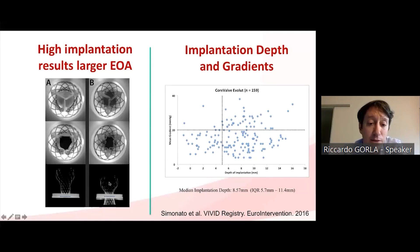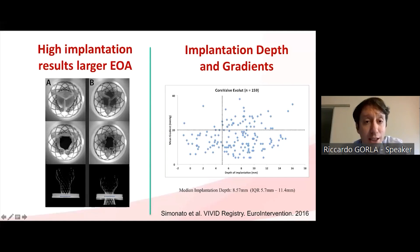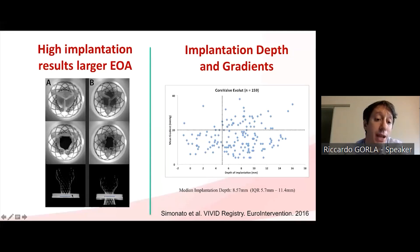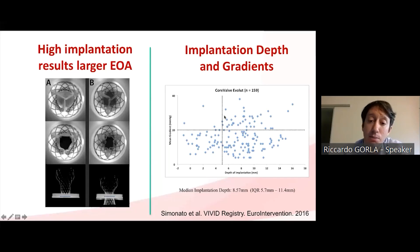If you implant the TAVR device too deep into the left ventricle, the new TAVR leaflets will not be able to fully expand, resulting in a smaller EOA. Conversely, if you manage to implant the TAVR device high, the TAVR leaflets can expand fully, resulting in lower gradients.